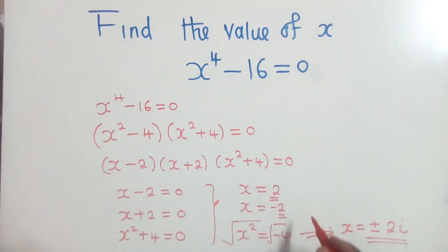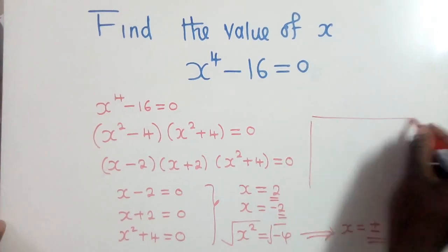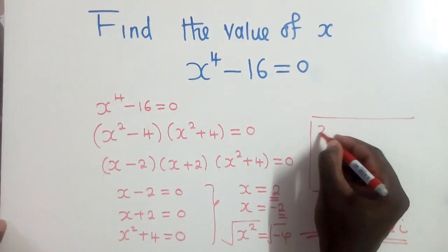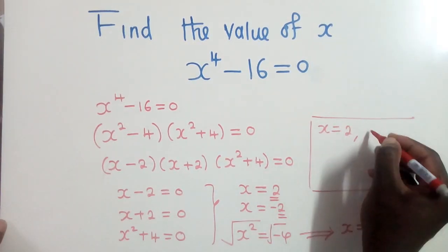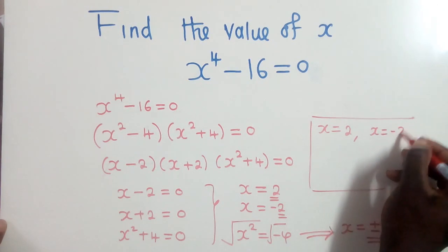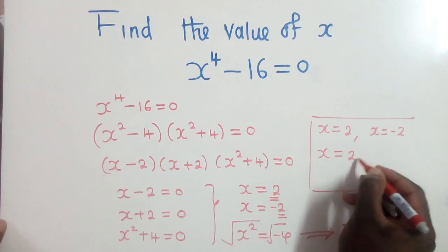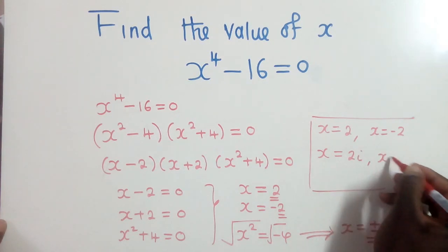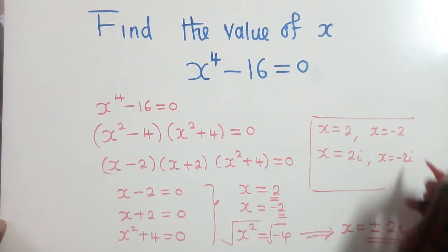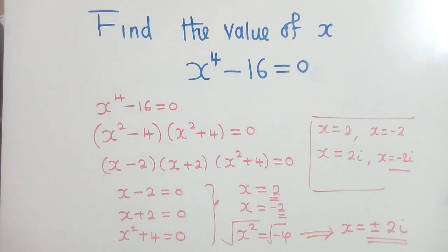So the solution, all the solutions of this question will be x = 2, x = -2, x = 2i, x = -2i. So these are the four solutions of this question.